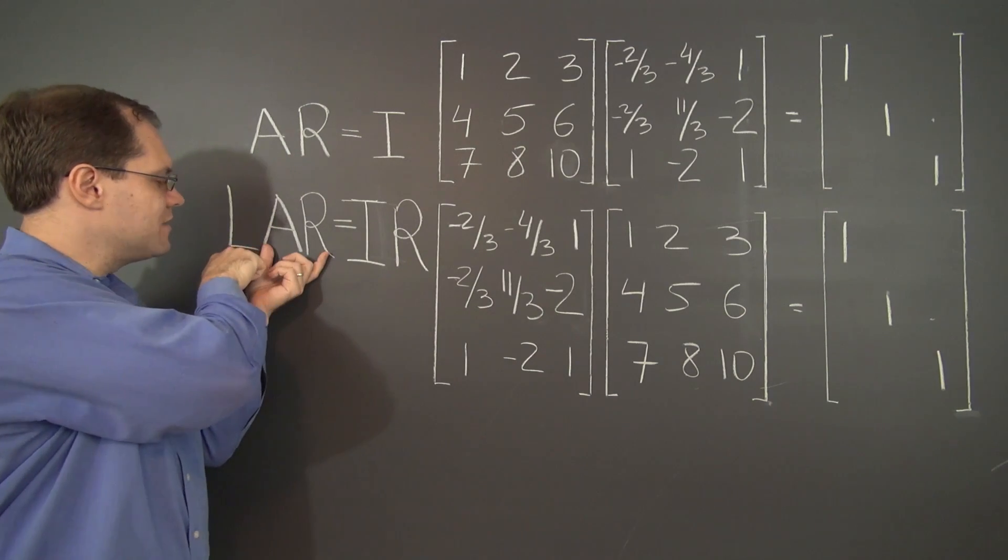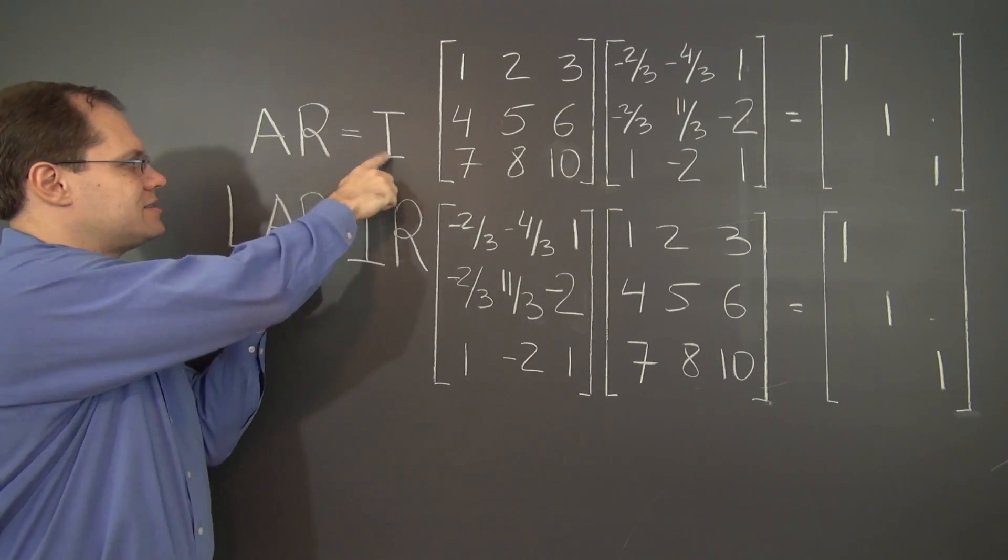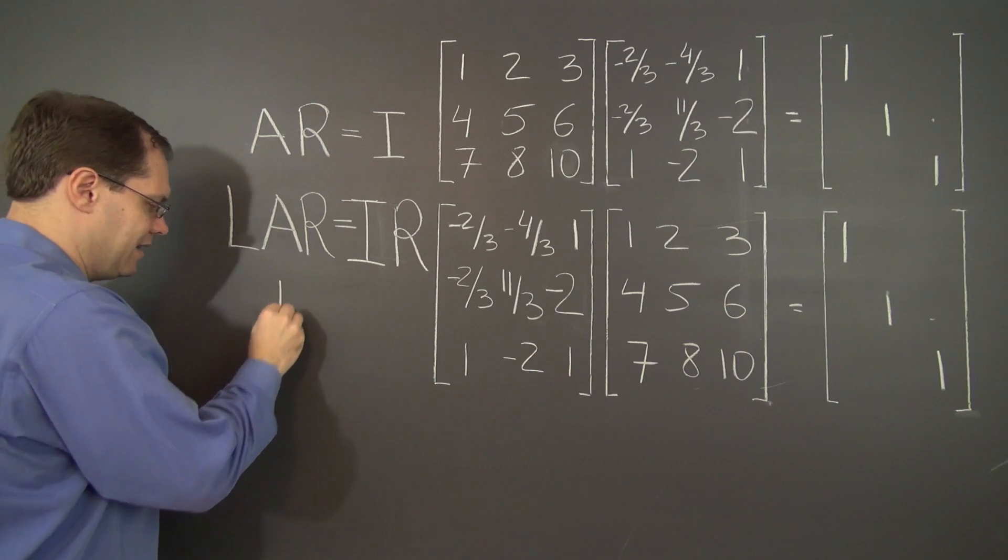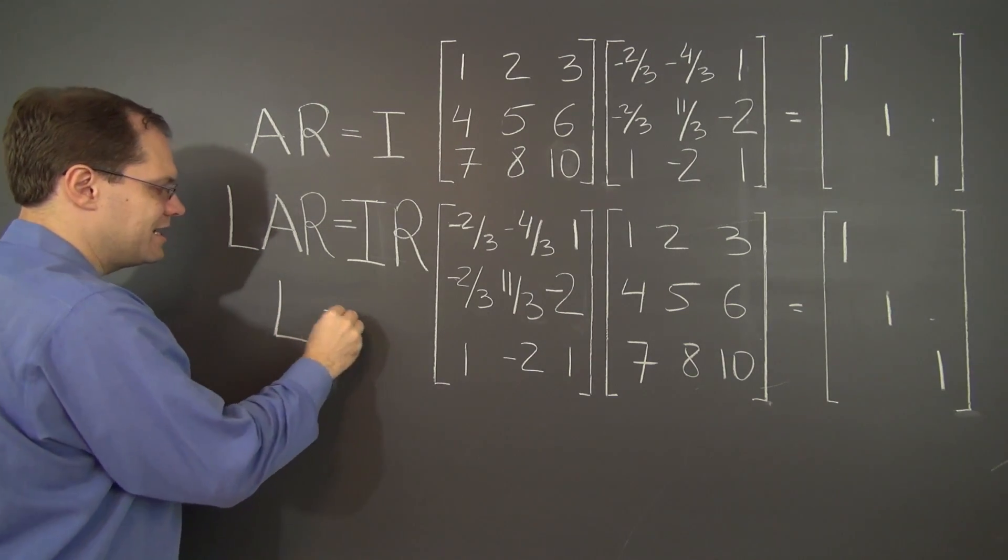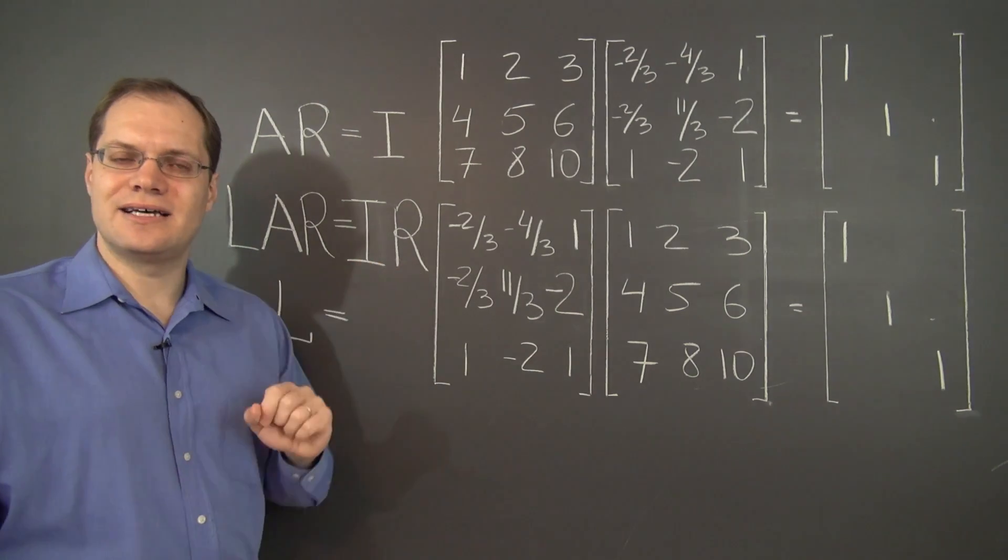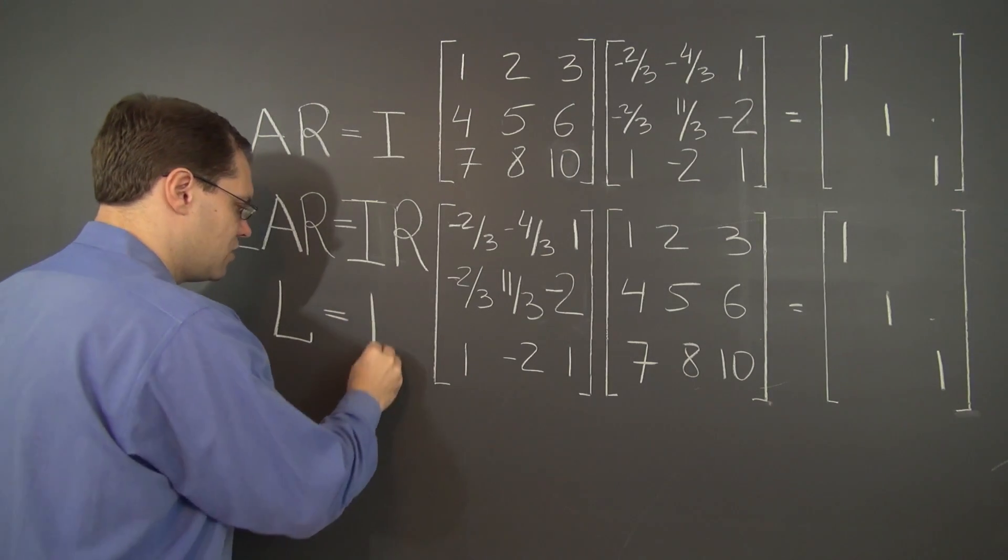And now notice that AR is the identity matrix. We have that from right here. So what we have on the left is L times identity, which is L. And on the right hand side, we have identity times R, which is R.